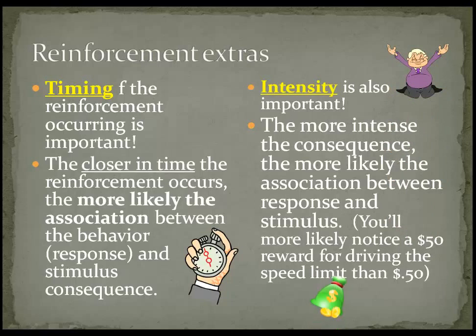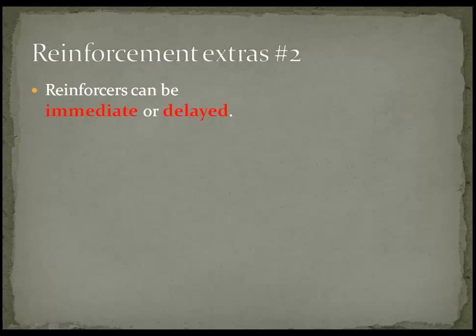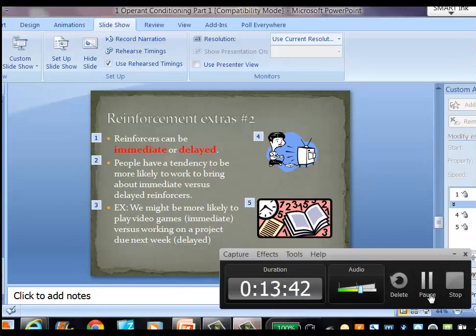Money would be a secondary reinforcer in that case. So to recap: positive and negative reinforcement, primary and secondary reinforcement, and Thorndike's puzzle box are the main points here. Back up and rewind if you need to. I will see you soon — thank you.